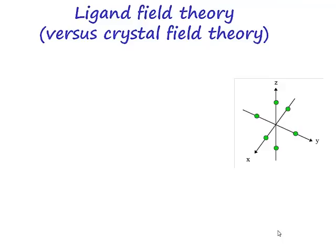Now if those orbitals are pointing along the axes they're pointing right at the negative charges. They're pointing directly at the negative charges. That means that the electrons in those orbitals are repelled most strongly and will move to higher energy.